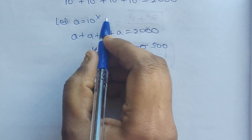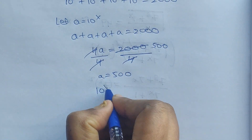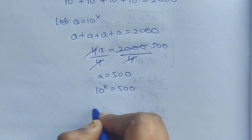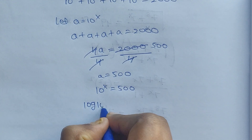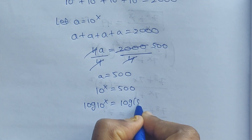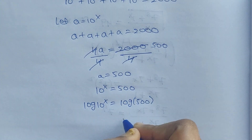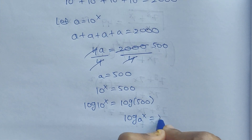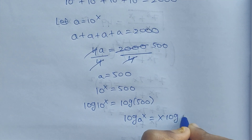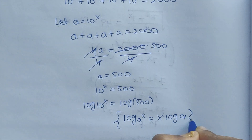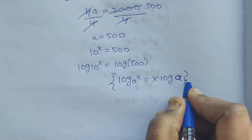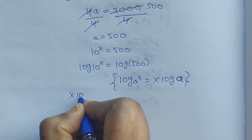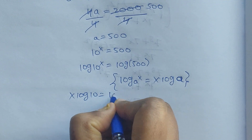Since a equals 10 to the power of x, we have 10 to the power of x equal to 500. Now apply log to both sides: log of 10 to the power of x equals log 500. I am going to use the formula that log a to the power of x equals x log a. So x log 10 equals log 500.